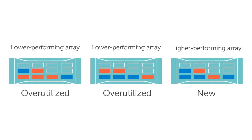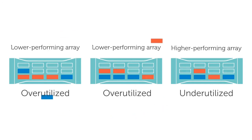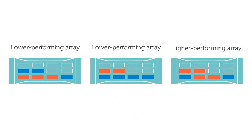Then the performance load balancer takes a look at latencies. The two original arrays are still over-utilized with high latency, while the newest array that's higher performing is underutilized — it has low latency. So the performance load balancer will swap hot blocks and cold blocks between the lower-performing arrays and the higher-performing array until all of the latencies are roughly balanced.